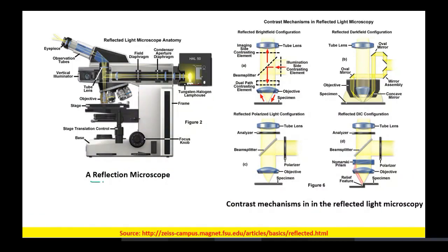In the reflection microscope, the illumination system and visualization system are on the same side of the sample. Light goes through the condenser aperture, diaphragm, field diaphragm, and condenser, then through the objective onto the sample. The reflected light returns through the objective into the eyepiece system. Reflected light microscopes have similar contrast mechanisms to the upright microscope.